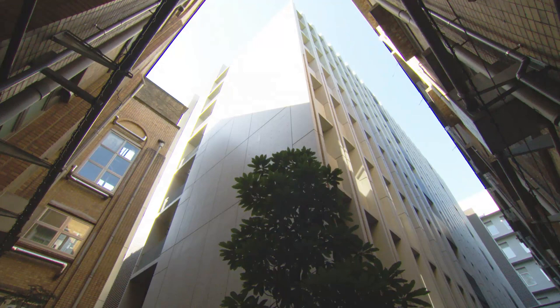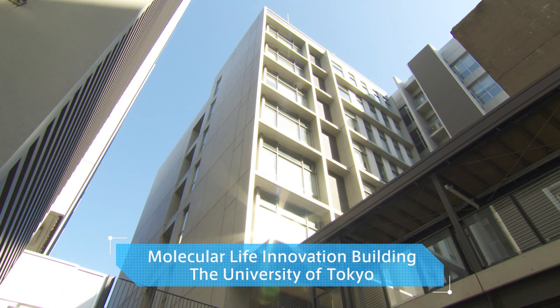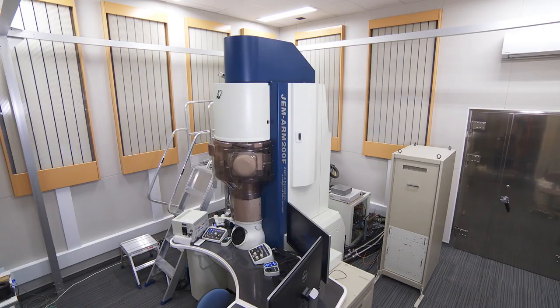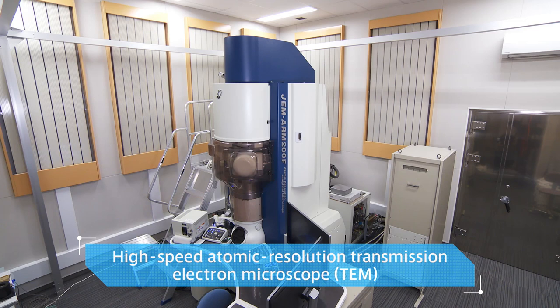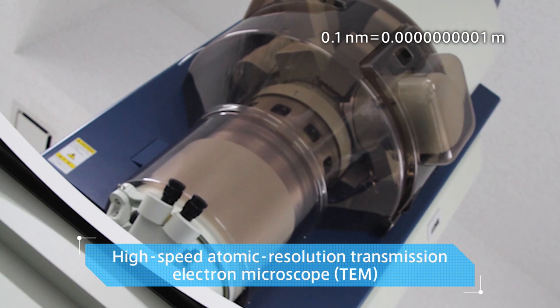The electron microscope used for this video imaging is located in the Molecular Life Innovation Building in the Hongo campus of the University of Tokyo. By using this electron microscope, it is possible to create continuous video imaging at a speed of 1,600 images per second, with an accuracy of less than 0.1 nanometer.